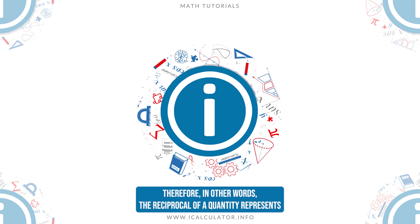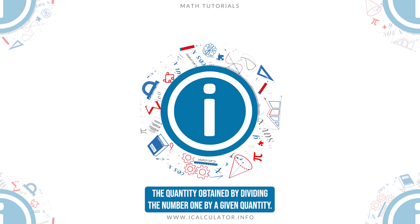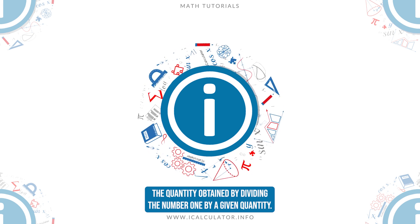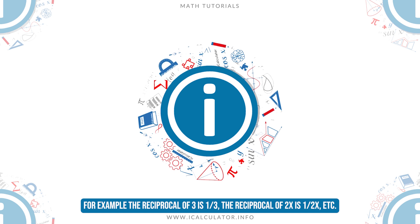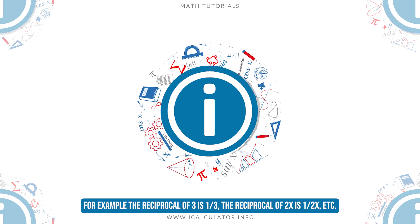In other words, the reciprocal of a quantity represents the quantity obtained by dividing the number 1 by a given quantity. For example, the reciprocal of 3 is 1 out of 3, the reciprocal of 2x is 1 out of 2x, etc.